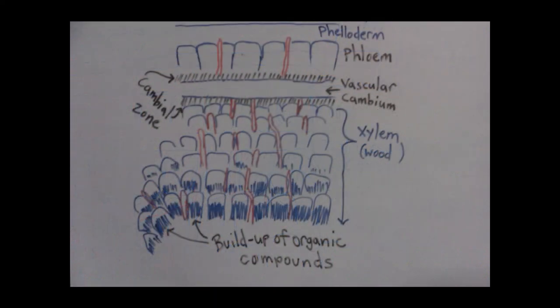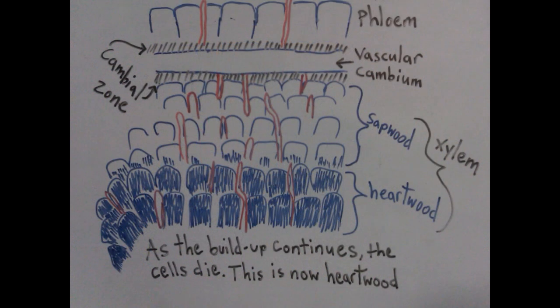Over time, and as the tree continues to grow, the sapwood increases in organic compounds such as terpenes, which help deal with pathogens and any injury or decay. Eventually, the xylem vessels of the sapwood become blocked and the living cells die. This deadwood is called heartwood. Because of the increased organic compounds, heartwood is highly resistant to decay. Heartwood does not transport any water, but it does provide mechanical support.